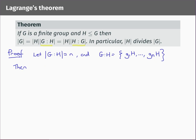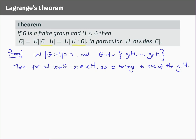I claim first that every element of G belongs to one of these cosets. The reason is that every element of G belongs to its own coset of H: for all x in G, x is an element of xH, because the left coset xH includes x times the identity, which is just x again. So x belongs to one of the gᵢH, since g₁H up to gₙH is the complete set of left cosets. Therefore G equals the union g₁H ∪ g₂H ∪ … ∪ gₙH.